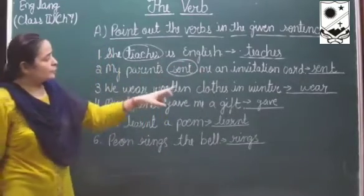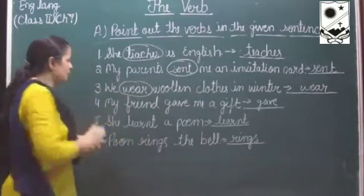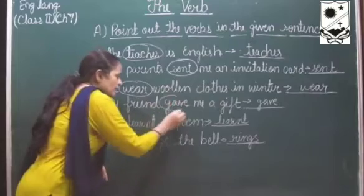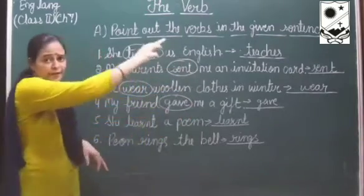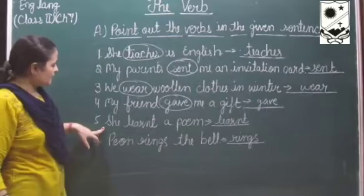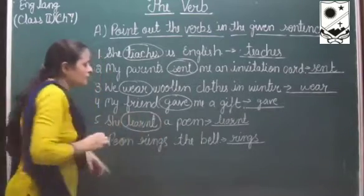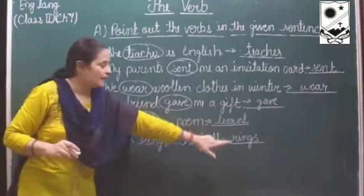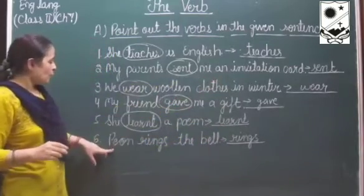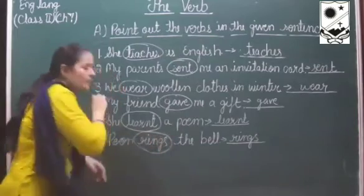We wear woolen clothes in winter - the action word is wear. My friend gave me a gift - gave is the action word. We will write the verb in front of each sentence. Next: she learnt a poem - the verb is learnt. Pion rings the bell - the verb is rings.